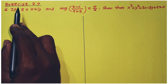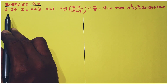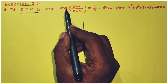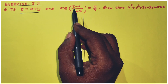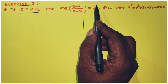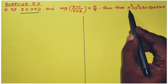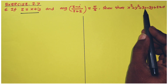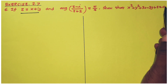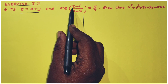Chapter 2, Exercise 2.7, Question number 6. If z is equal to x plus iy and argument of (z minus i) divided by (z plus 2) is equal to pi by 4, show that x squared plus y squared plus 3x minus 3y plus 2 is equal to 0.